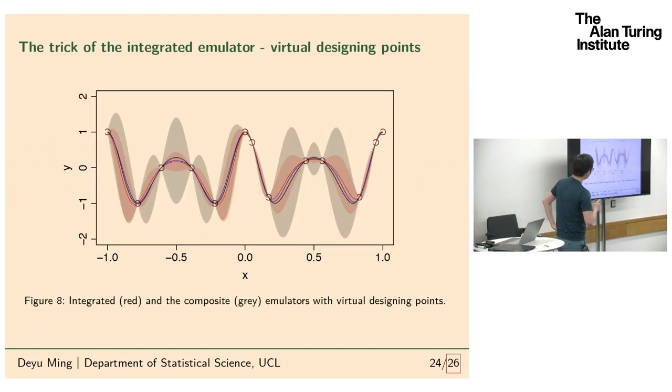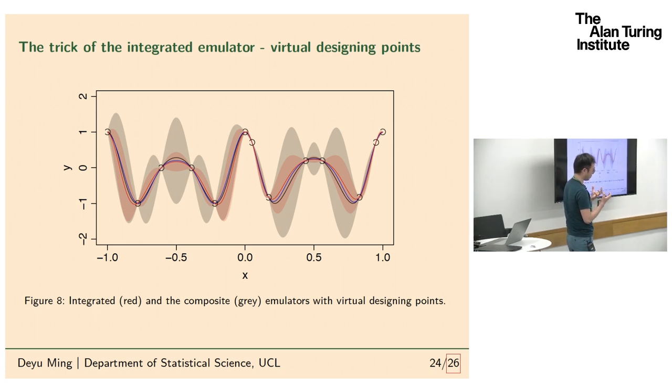I said, okay, if it is the virtual design points that help the integrated emulator, then what if I put these virtual design points into the initial design set for the composite run? But you can see still the composite emulator provides wider error bounds than the integrated. This is because when you emulate the two models separately you gain more information about the two physical models, whereas even with identical design points the composite didn't know how the information flows in this system. That's the reason why it cannot reduce the error there.